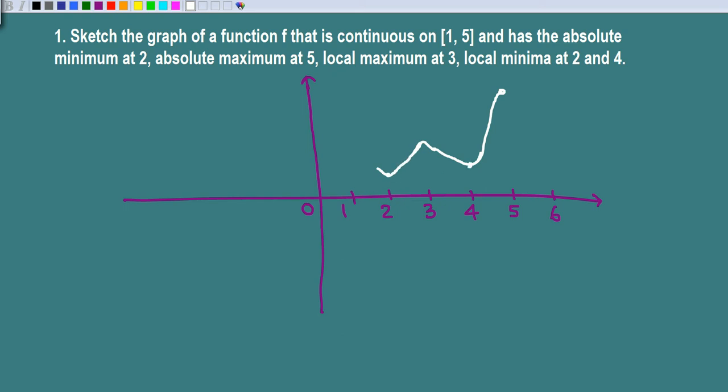Now this is a minimum at 4, minimum at 2, local max at 3, and absolute minimum at 2. So this is the absolute minimum and this is the absolute maximum.